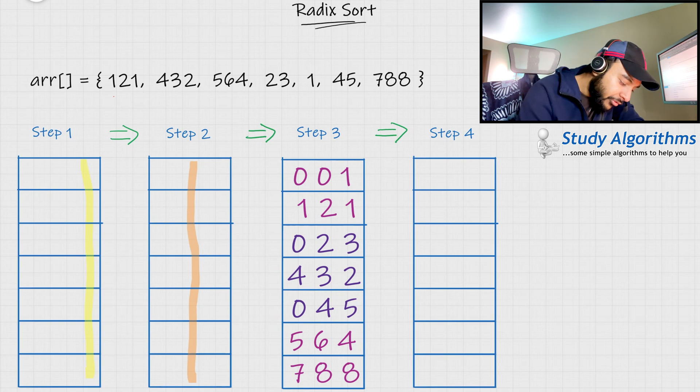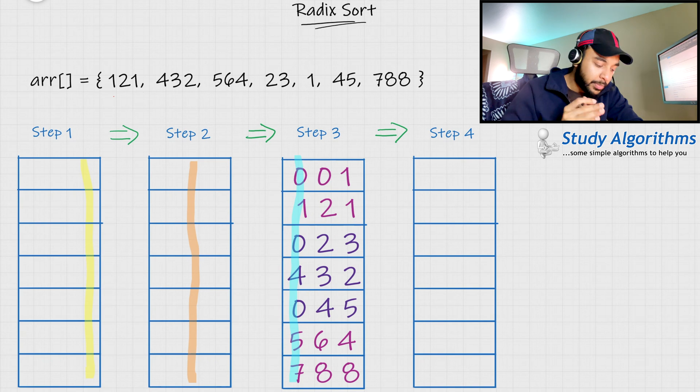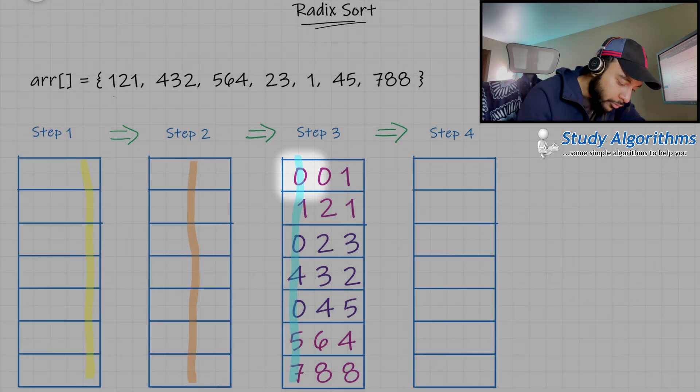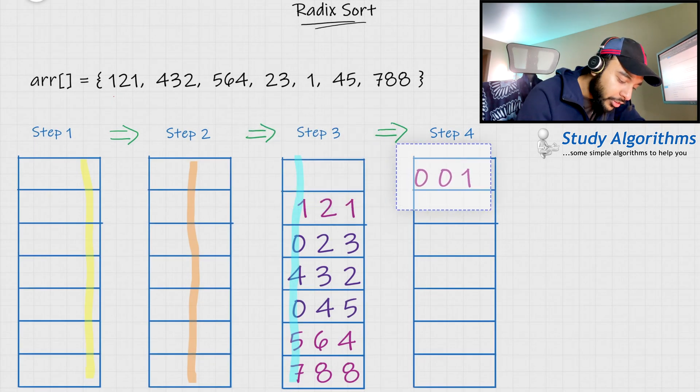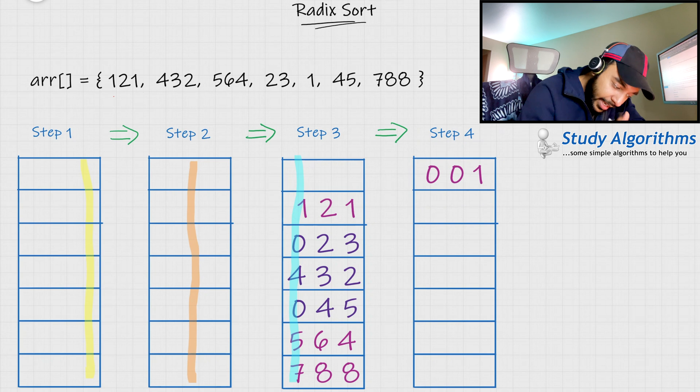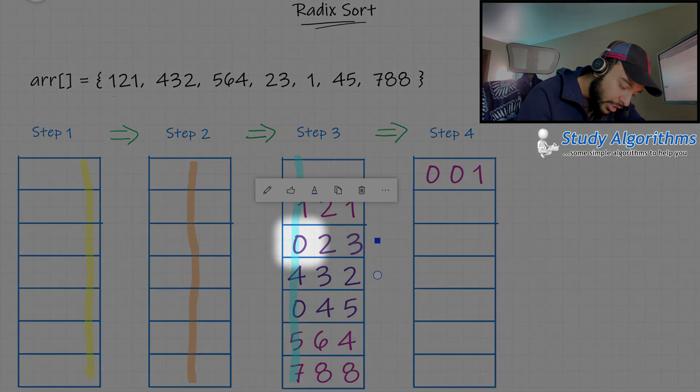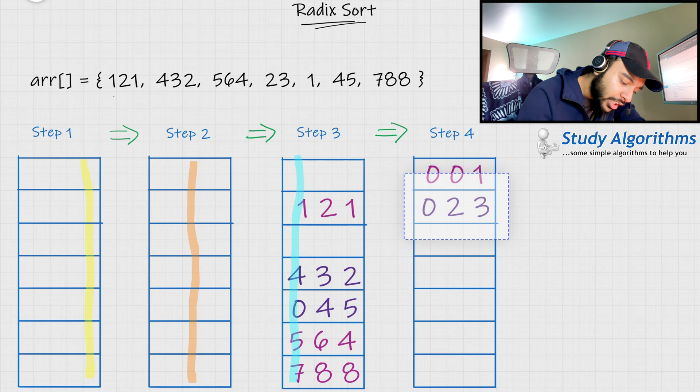Now, as a final step, we will sort all of these numbers using the digits in the hundreds place. Once again, always start from the beginning. So you find the number 0. So simply take this up and move it to the first position. Next starting from the top, search for the second 0. You find it over here. So take this and move it to the second position.